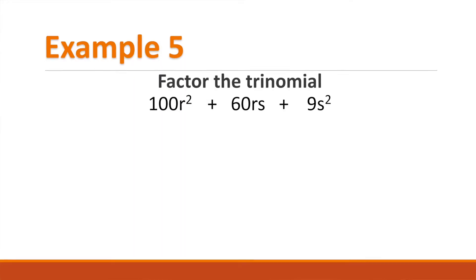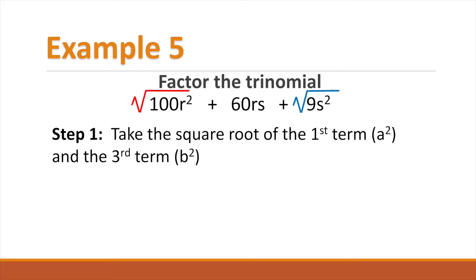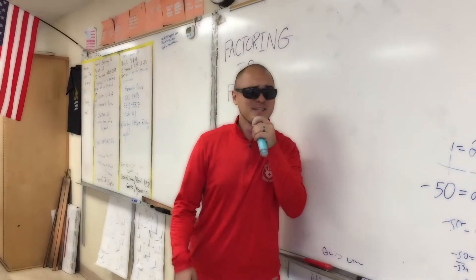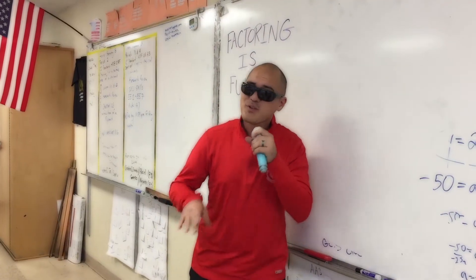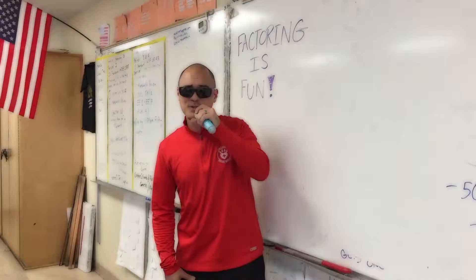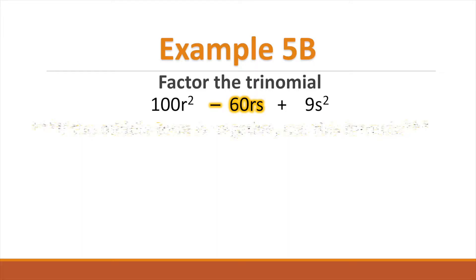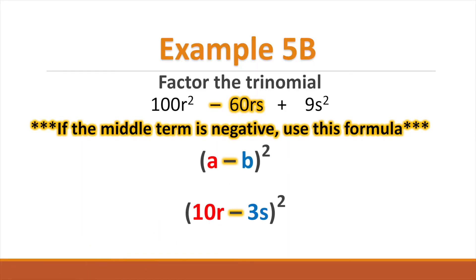a squared plus 2ab plus b squared — don't be scared. Square root term 1 and term 3, then you gotta check the middle for the 2ab. And if all goes well, then you must take the quantity of the (a + b) to the power of 2. And if there's a minus in the middle, then you know what to do.